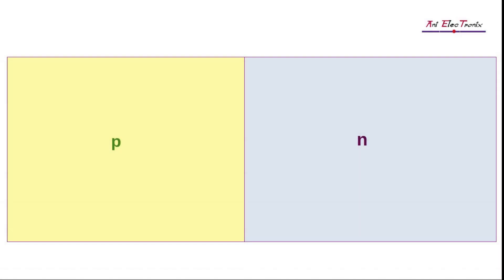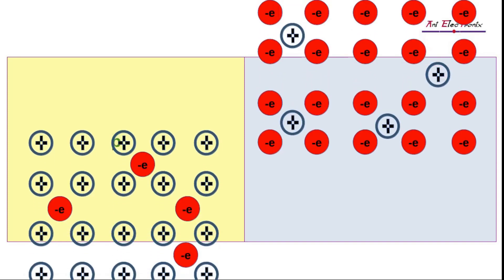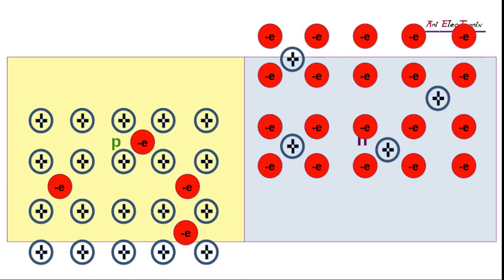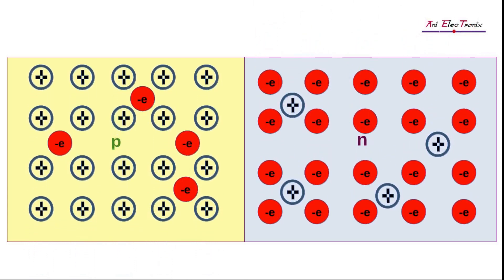When the manufacturer dopes a pure semiconductor crystal on the left side with trivalent impurities and the right side with pentavalent impurities, a new type of semiconductor is created. The border or junction is where the P and N semiconductors meet. Therefore, we refer to this as the P-N junction diode.